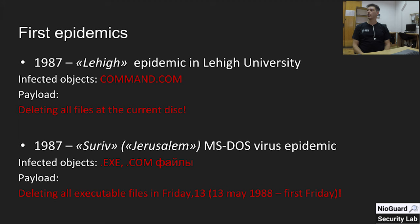That same year, we saw the Jerusalem virus, also known as Suriv. It was also an MS-DOS virus that infected executable .exe and .com files. The payload deleted files, but only on Friday the 13th — it was programmed specifically for that date. The first such Friday occurred the following year, on 13 May 1988, by which time it had spread across the Atlantic Ocean to the US and infected many corporations.